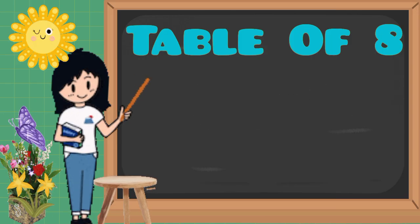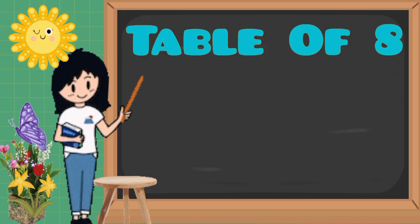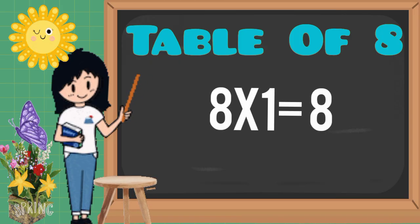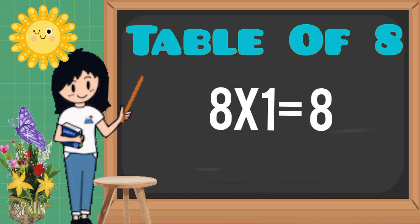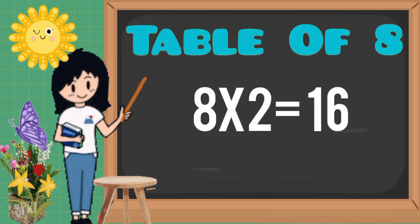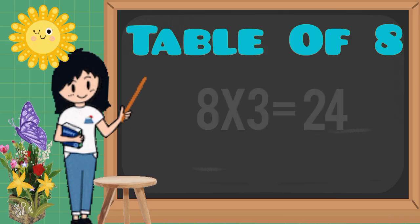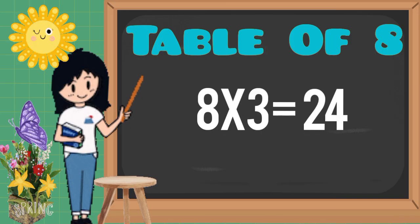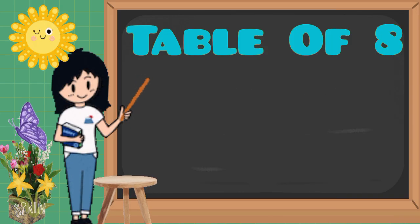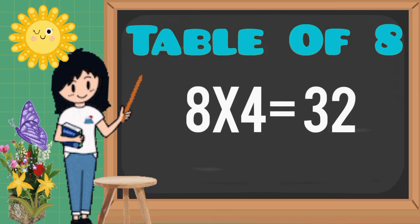Let's learn it again. Eight ones are eight, eight twos are sixteen, eight threes are twenty-four, eight fours are thirty-two.